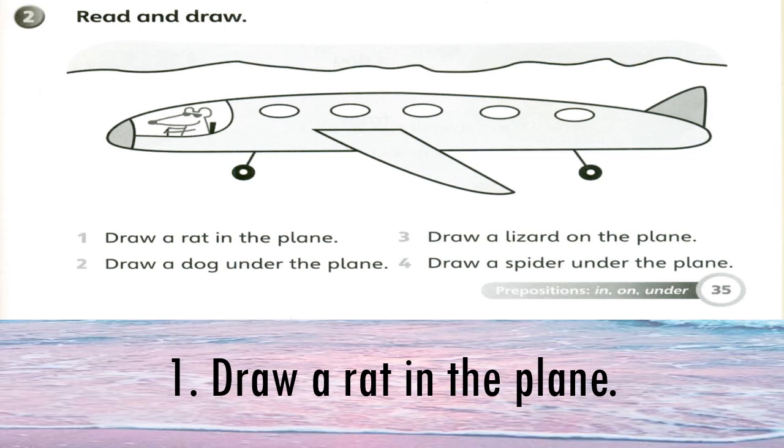Number one. Draw a rat in the plane. You are going to draw a rat. Rat tu apa? Tikus. Awak kena lukis tikus in, itu di dalam plane. Awak kena lukis seekor tikus di dalam kapal terbang. For example, contohnya dah diberikan. This is a rat in the plane.